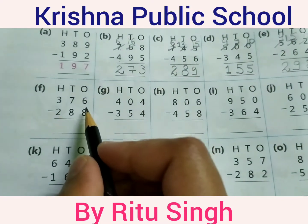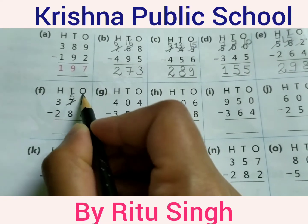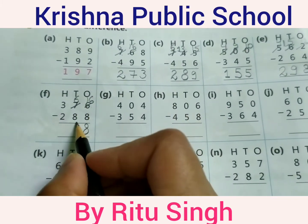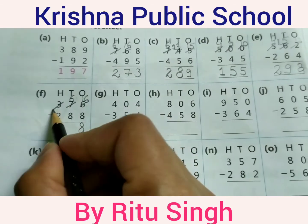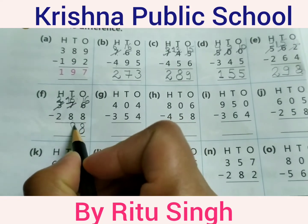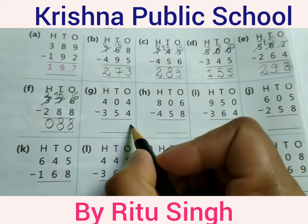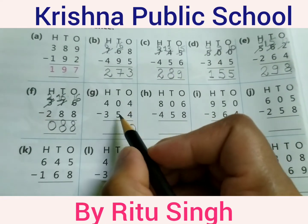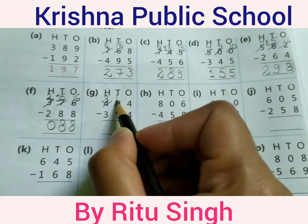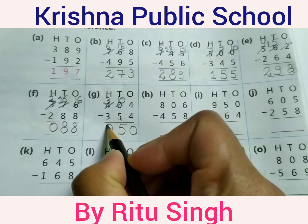6 minus 8 — 6 is a smaller digit compared to 8. Borrow from 7, making it 16. 16 minus 8 equals 8. 6 minus 8 again — borrow from hundreds position, making it 16. 16 minus 8 equals 8. 2 minus 2 equals 0. 4 minus 4 equals 0. 0 minus 5 — borrow from 4, making it 10. 10 minus 5 equals 5. 3 minus 3 equals 0. Your answer is 50.